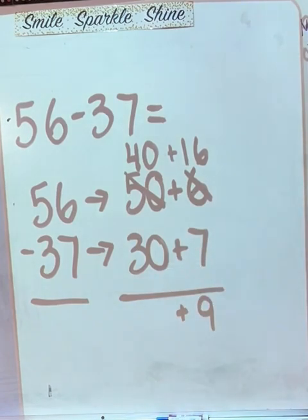40 minus 30 equals 10. And here's our answer.